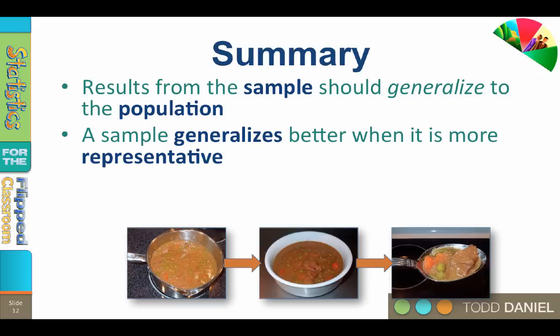As long as that spoonful is representative — the spoonful must contain a carrot, a pea, some beef, the potato, etc. As long as the elements of the stew are represented in the spoonful, what we learn from the spoonful can tell us about the entire kettle. We only need a little taste to know if the stew needs more salt. Of course, if your spoonful lacks carrots, then you cannot answer the question of whether carrots are fully cooked from your non-representative spoonful.